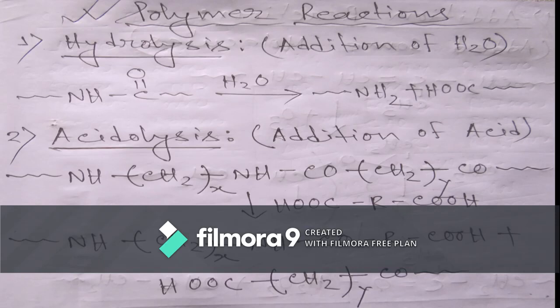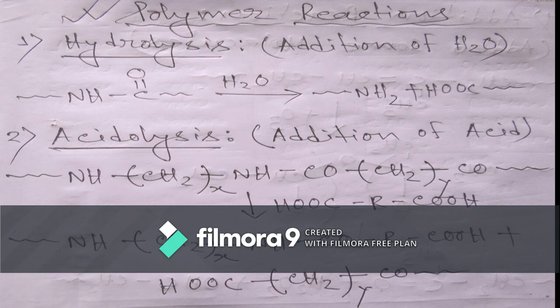First, hydrolysis. Hydrolysis means addition of a water molecule into the polymer chain. This water molecule divides the polymer chain into different types of polymer chains. Water dissolves this polymer and divides this polyamide into an amine, one different amide polymer, and a different carboxylic polymer.